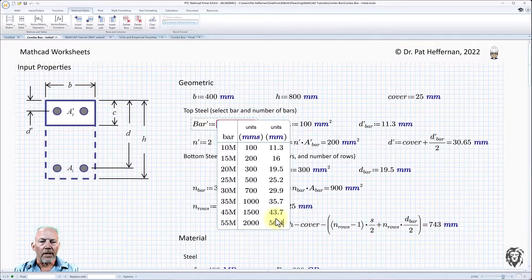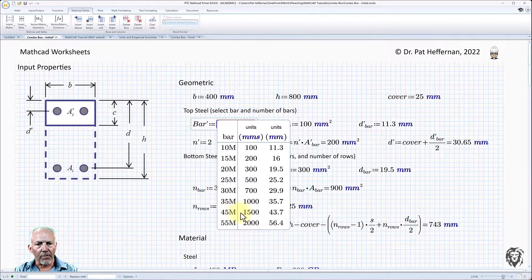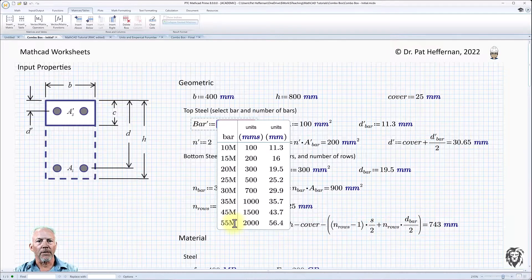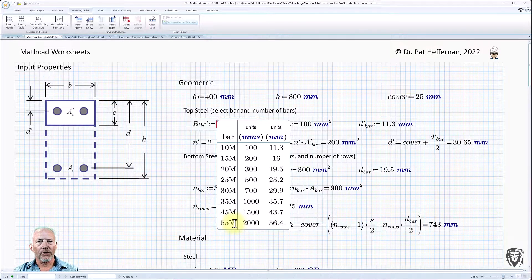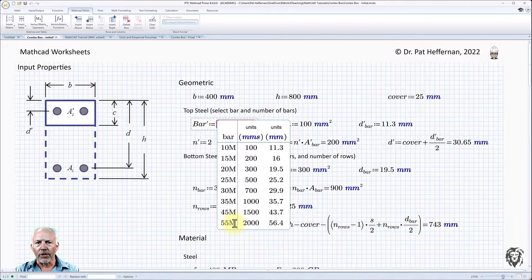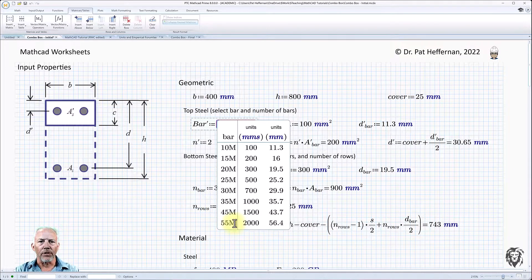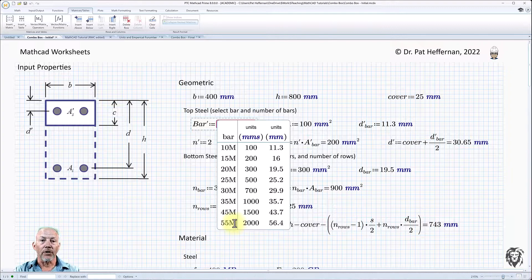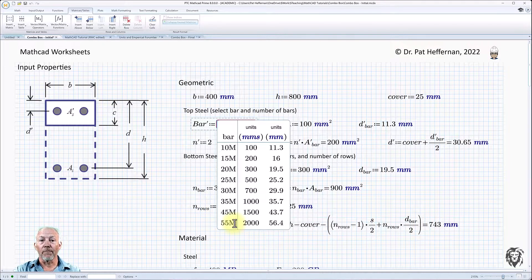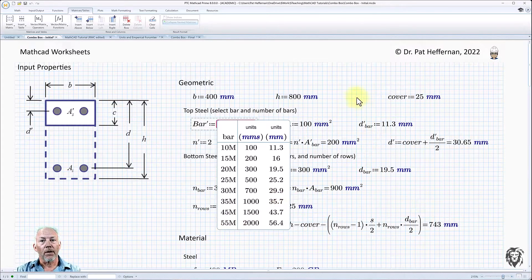Okay, there we go, we have managed to complete the table, we've got all of the data in. So these are the standard bars that we want to choose from. And so the combo box itself is pretty much done. Now we're going to have to use it. And the first thing we're going to have to do to make it usable is to make sure that this unit MMS is recognized as the equivalent of millimeters squared.